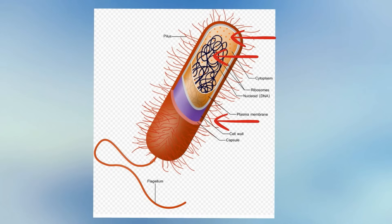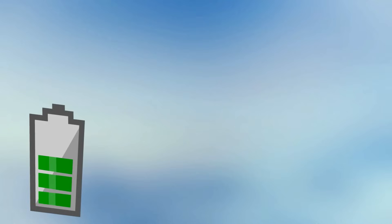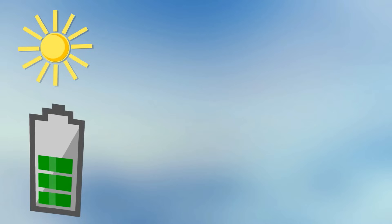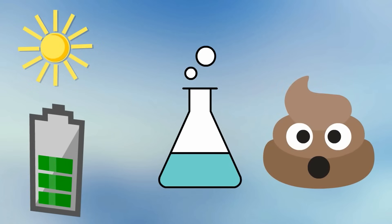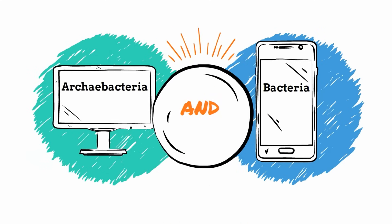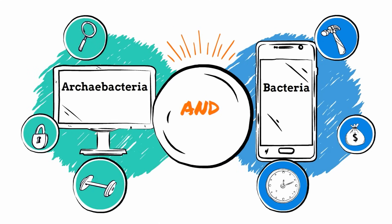Bacteria get their energy in many different methods. Some get energy from the sun, others get energy from chemicals like CO2, while others break down organic material. This kingdom is divided into two groups: Archaeobacteria and Bacteria.